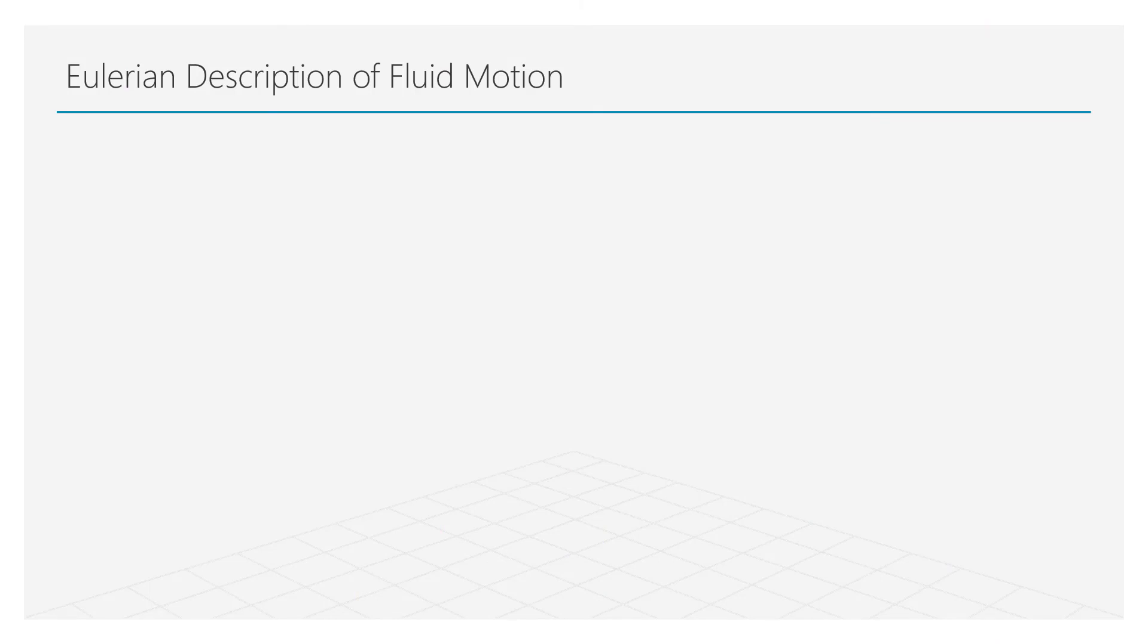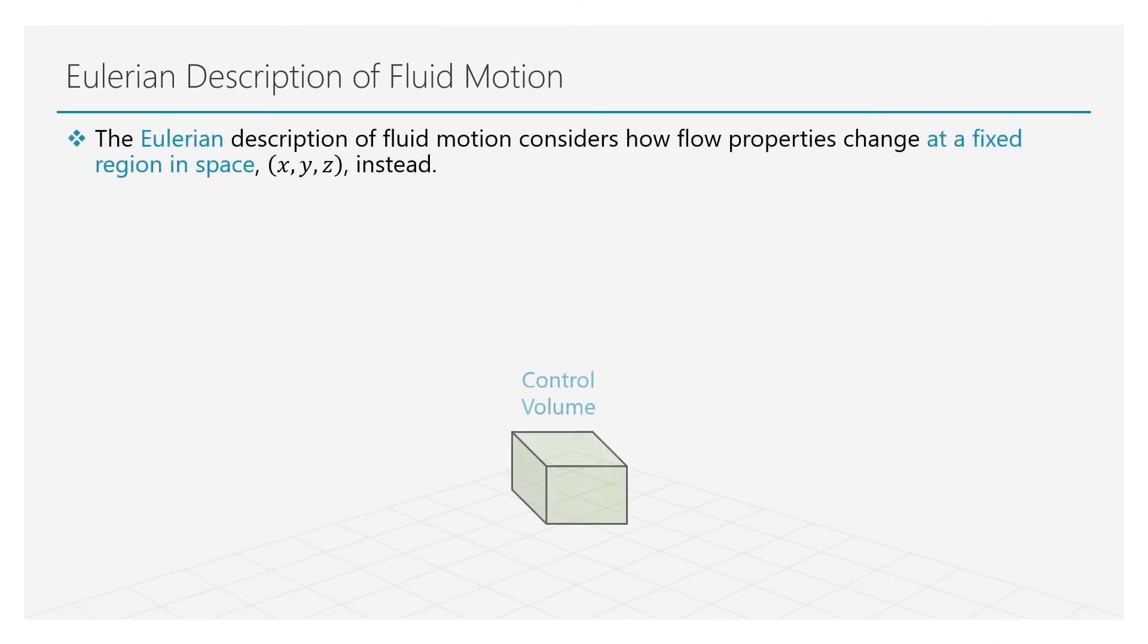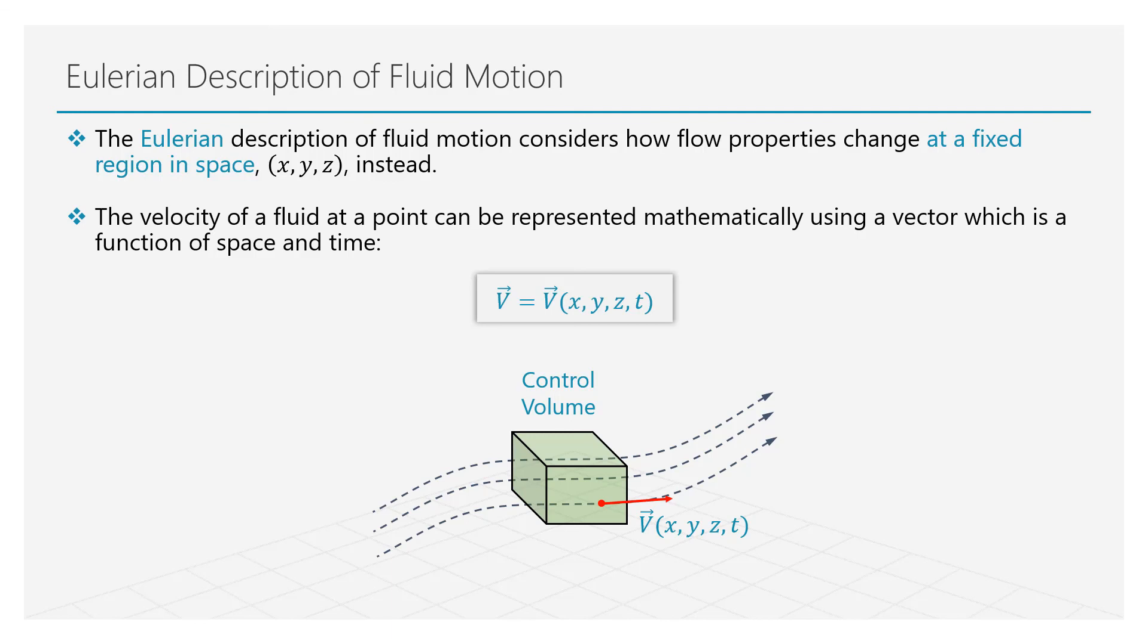The second type of mathematical description is the Eulerian description. In this, we focus on a particular region in space rather than on individual fluid particles. These regions in space are commonly referred to as control volumes and its boundaries are referred to as control surfaces. Fluid is viewed as it enters and exits these control surfaces. The flow parameters and fluid properties are described to be a function of both time and space.